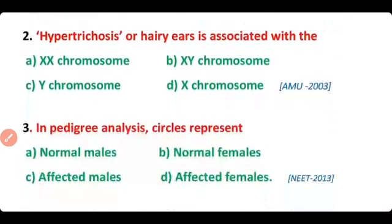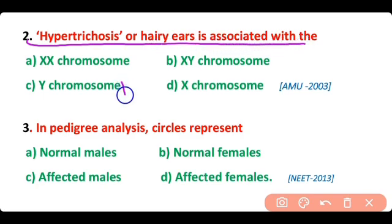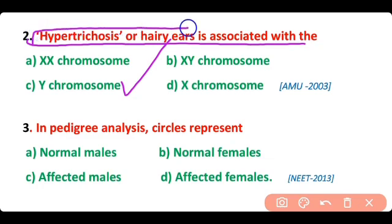Question number 2. Hypertrichosis, or hairy ears, is associated with the Y chromosome. So correct answer is option C. Hypertrichosis is a Y-linked disease.